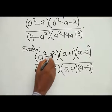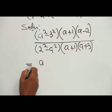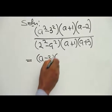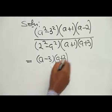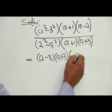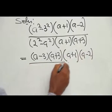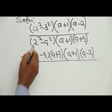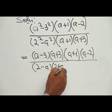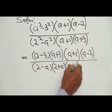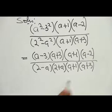Applying the difference of two squares to A squared minus 3 squared gives (A minus 3)(A plus 3). Continuing in the numerator, we also have (A plus 1)(A minus 2). The numerator is now fully factorized.